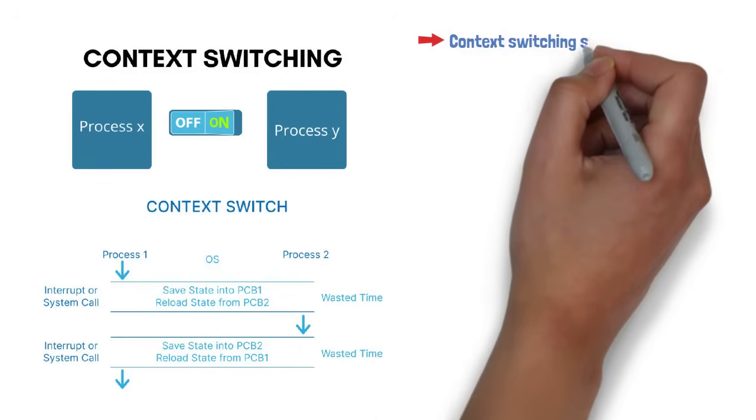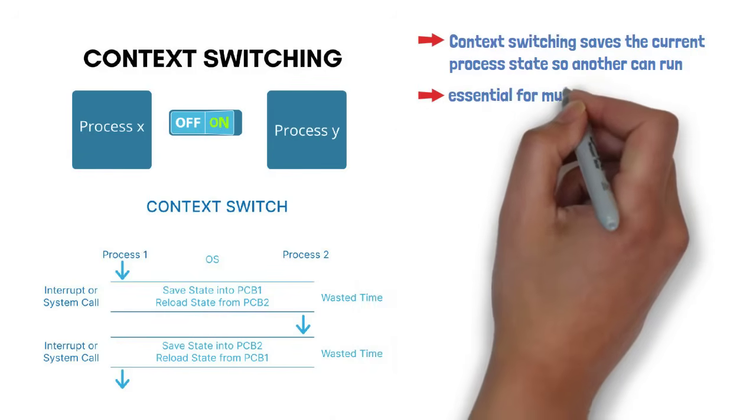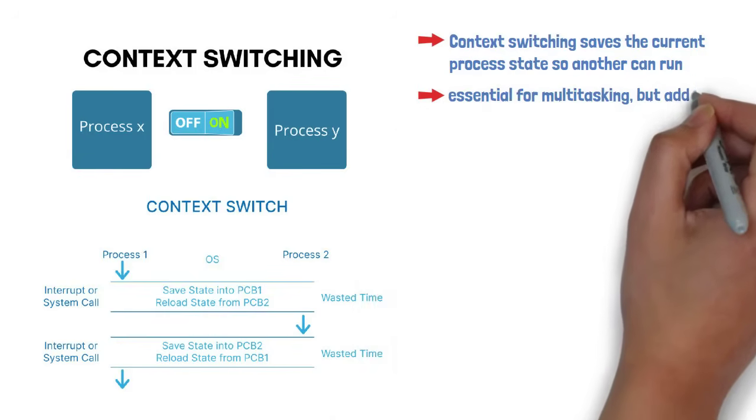Context switching saves the current process state so another can run. It's essential for multitasking but adds some performance overhead.